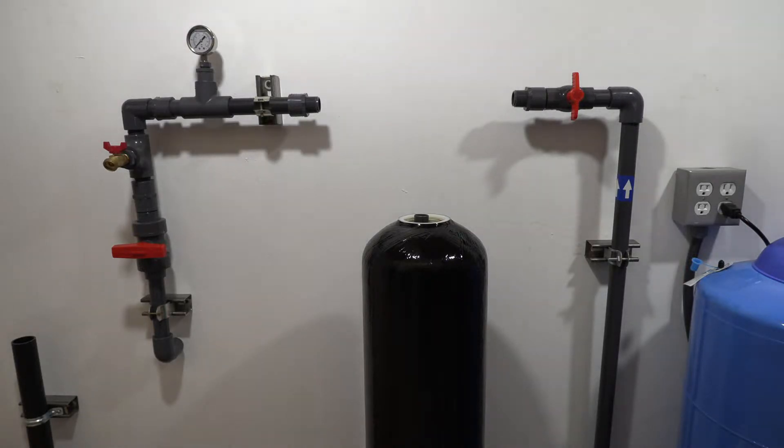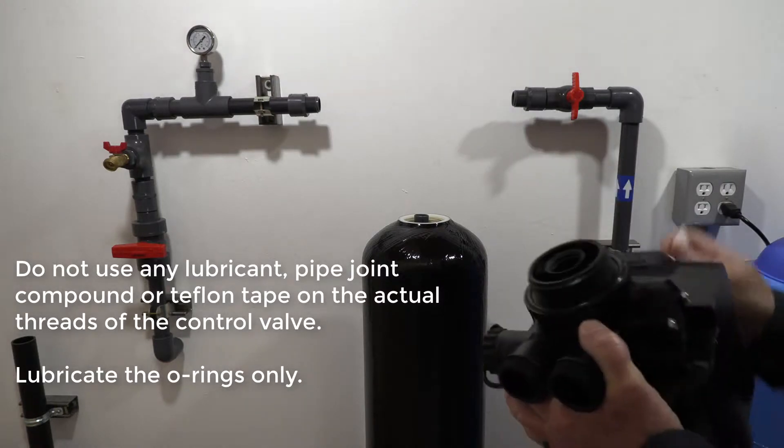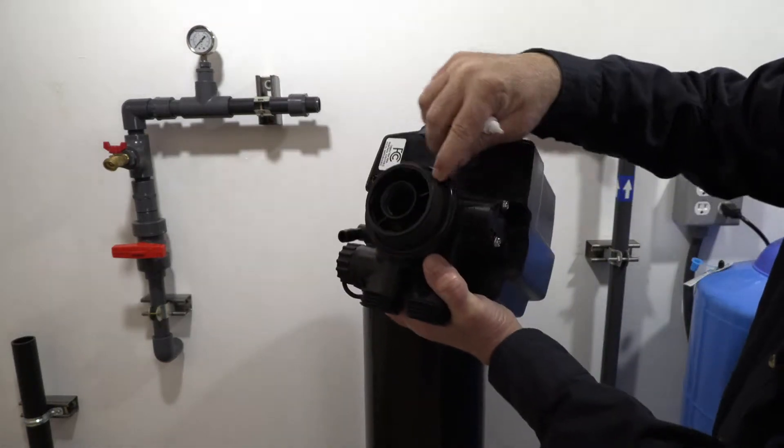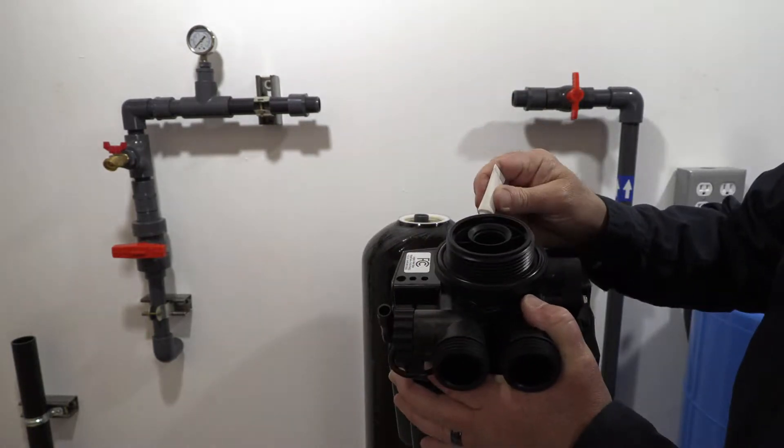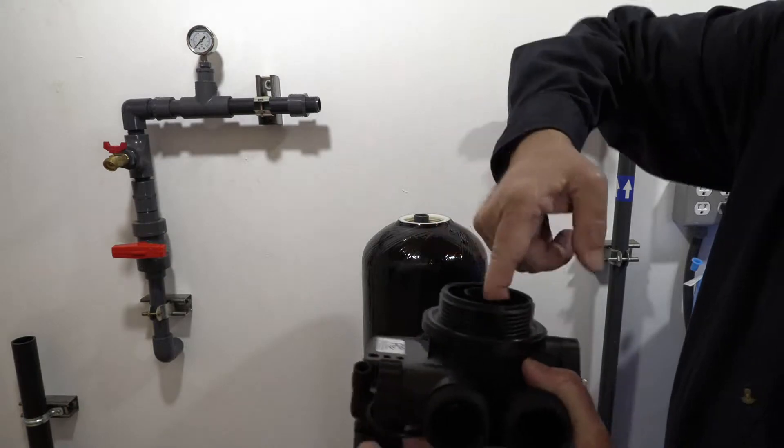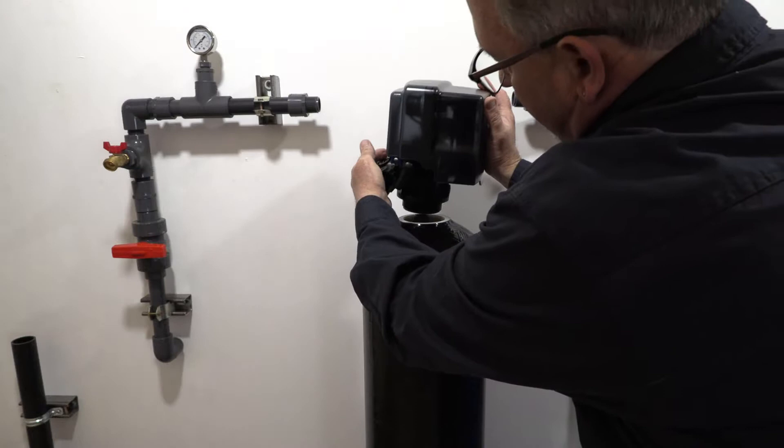So we're going to go ahead and install the valve. We shipped a little tube of lube with your valve and there's an o-ring here that seats around the d-tube and an o-ring here that seats to the tank. We want to make sure we put a little lube on each of those and put a nice film all the way around and then we'll go ahead and install the valve.